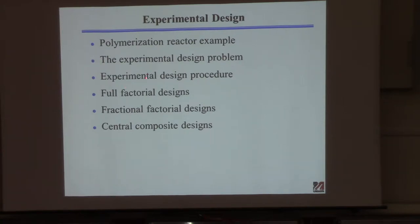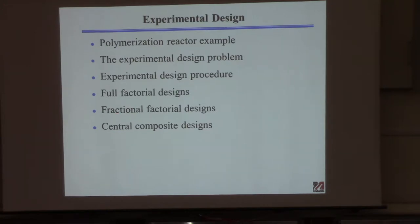The three designs are: full factorial designs — a simple concept but not very efficient, as you can tell by the word 'factorial'; fractional factorial design, doing a fraction (half or a quarter) chosen in a particular smart way; and central composite designs, which will explain the data set from yesterday where everything was scaled between minus two and two.